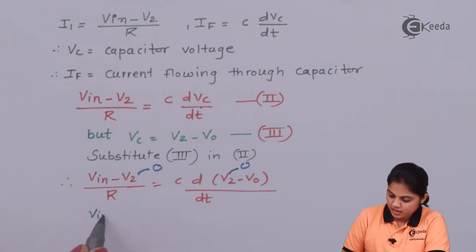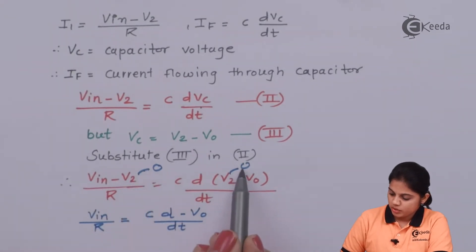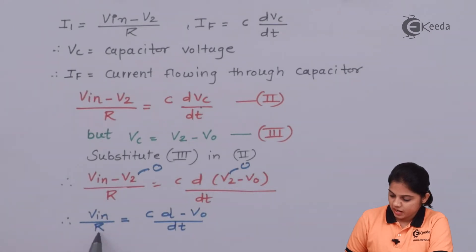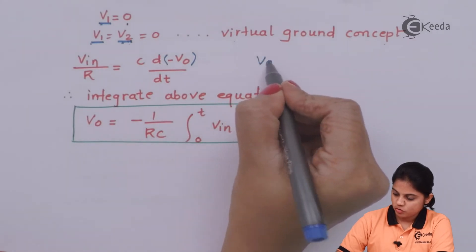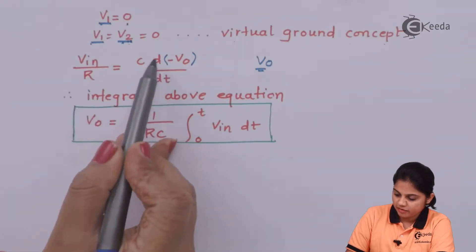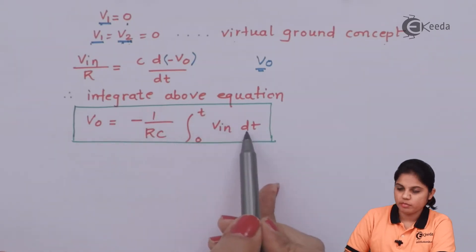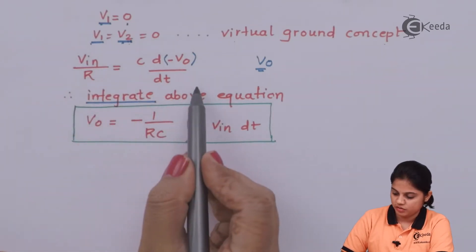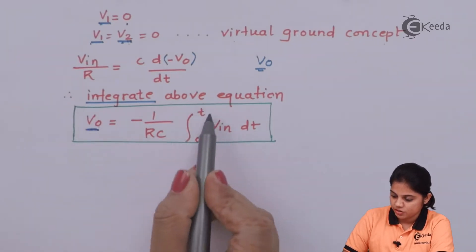Substituting V2 = 0 into the equation, the equation becomes: V-in / R = C × d(−V0)/dt. So we have obtained this expression. To solve for V0, rearranging and integrating both sides, we get: V0 = −(1/RC) × ∫₀ᵀ V-in dt. So it is now clear that the output voltage is directly proportional to the integration of the input voltage.